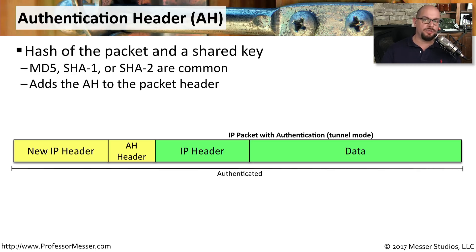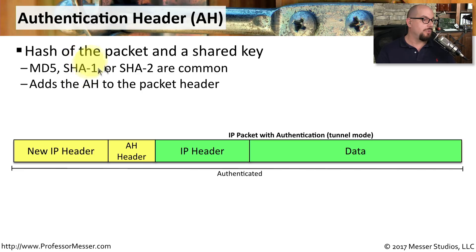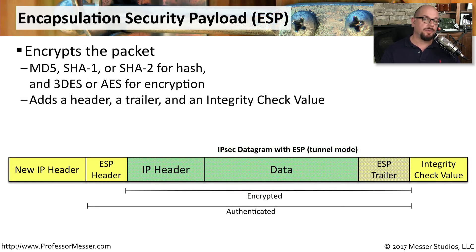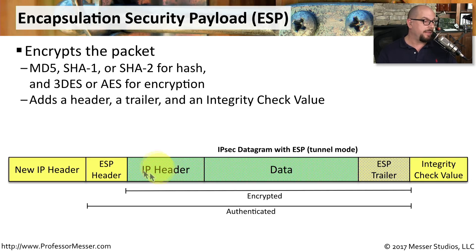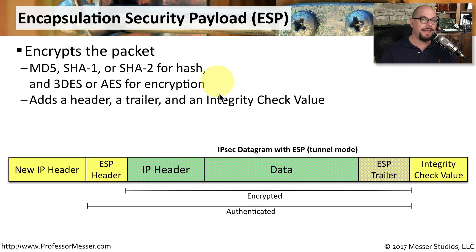The Authentication Header used within IPsec provides integrity of data sent through the network. IPsec takes the IP header and the data, combines them with a shared key, and produces a hash — typically based on MD5, SHA-1, or SHA-2 — adding that authentication header to the beginning of the packet. The part of IPsec providing encryption is the Encapsulation Security Payload, or ESP. It uses Triple DES or, more commonly, AES for encryption, and adds a header, trailer, and an integrity check value. This means the IP header, data, and ESP trailer are all inside the encrypted payload, while the new IP header, ESP header, and integrity check value remain on the outside. This allows you to authenticate almost all of the data when running an IPsec datagram with ESP encryption.